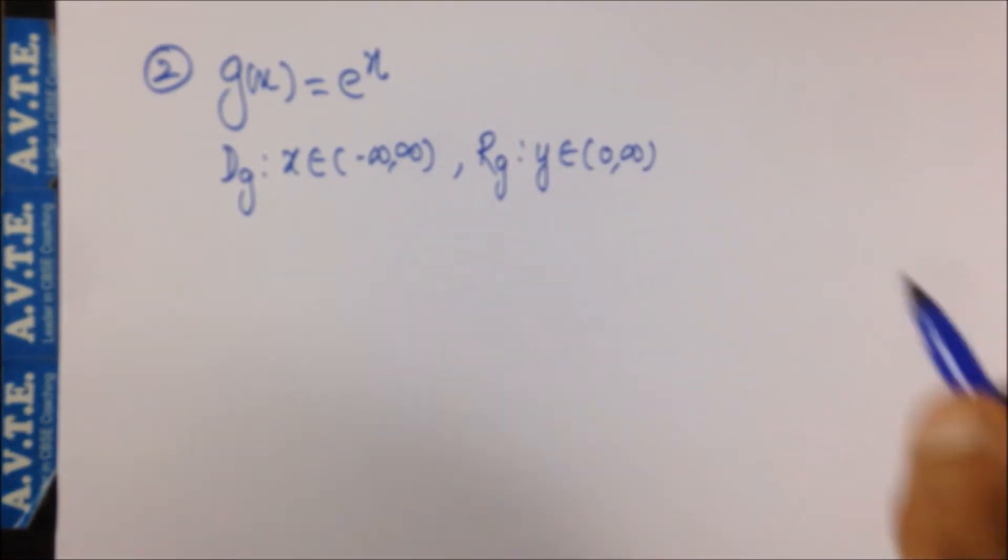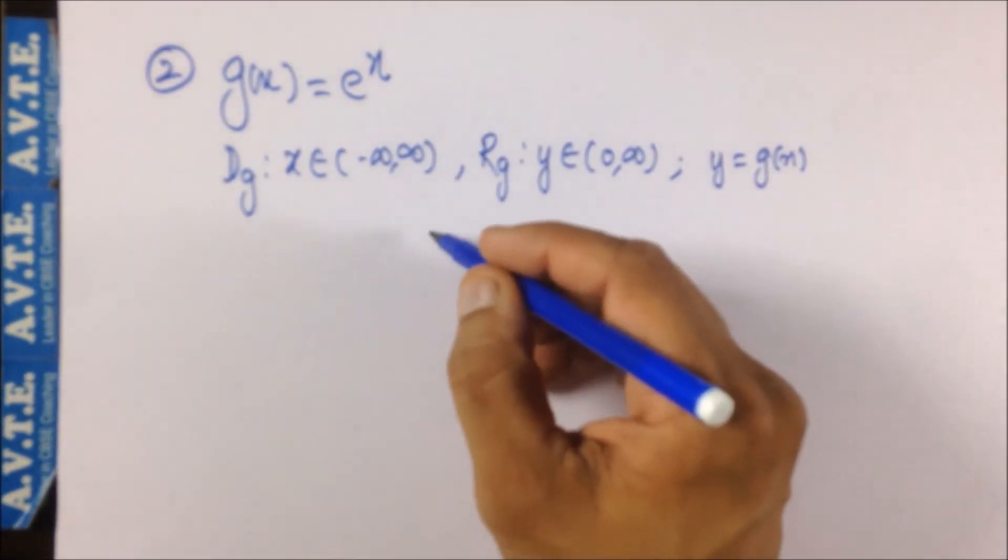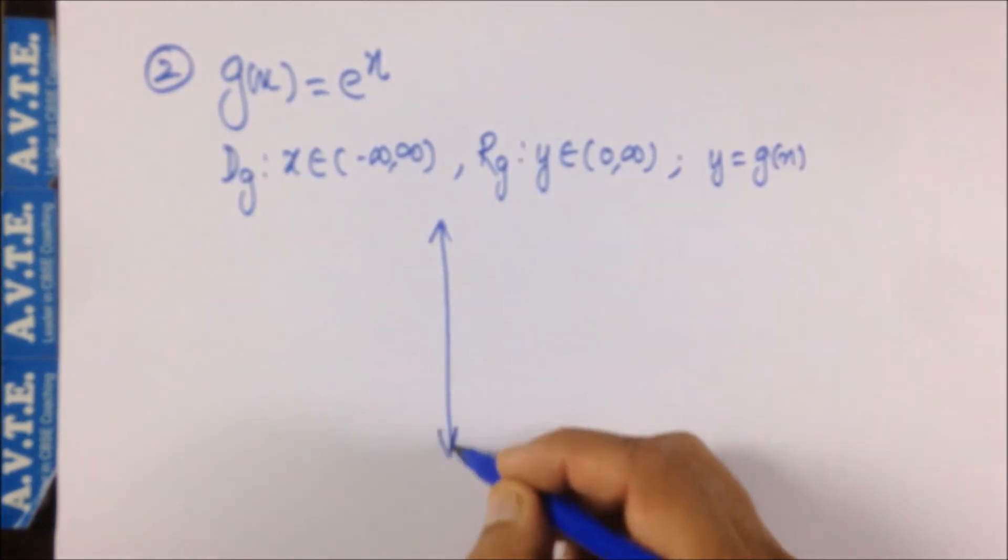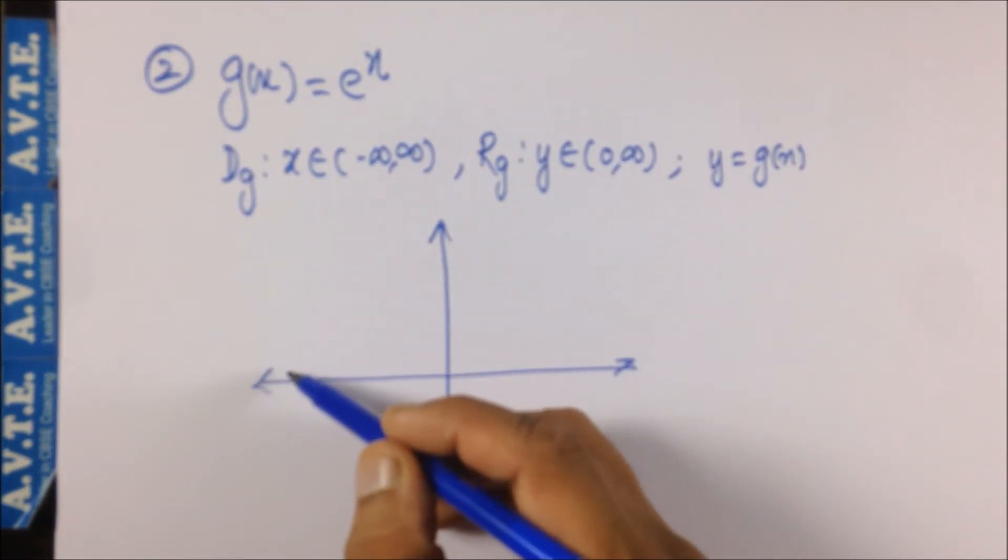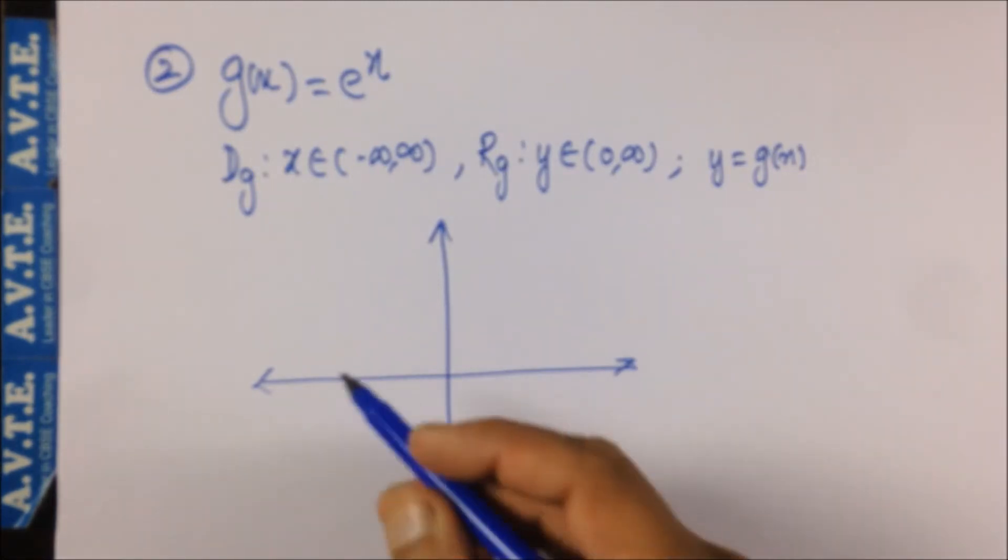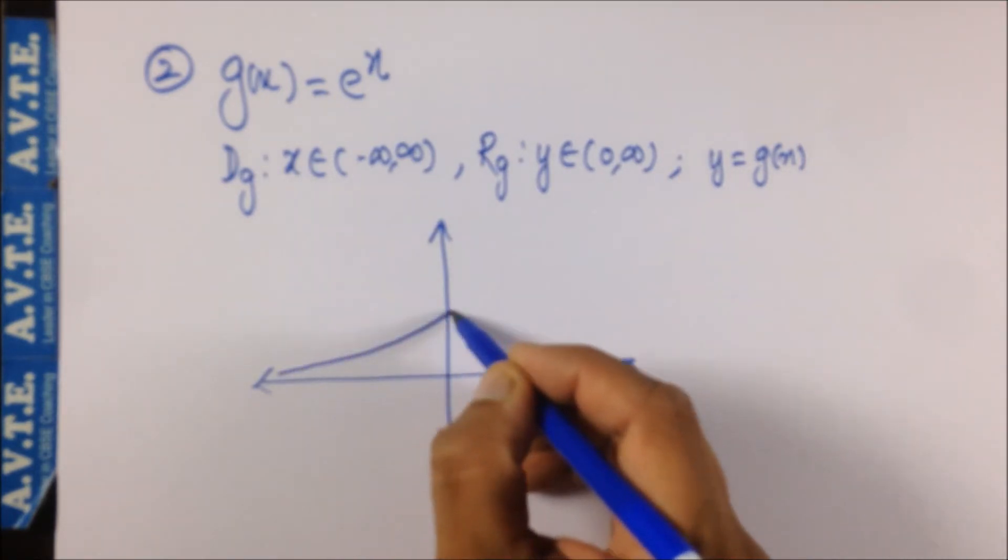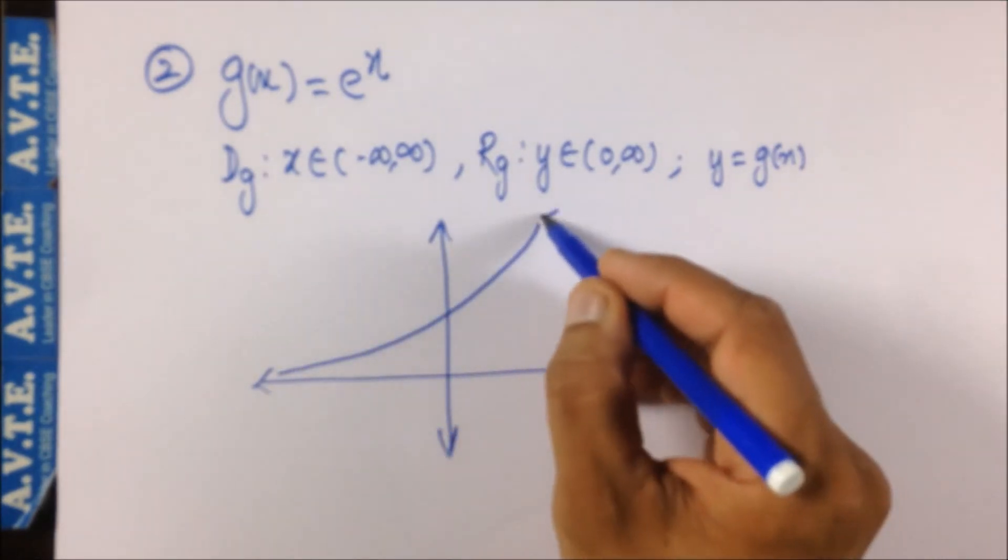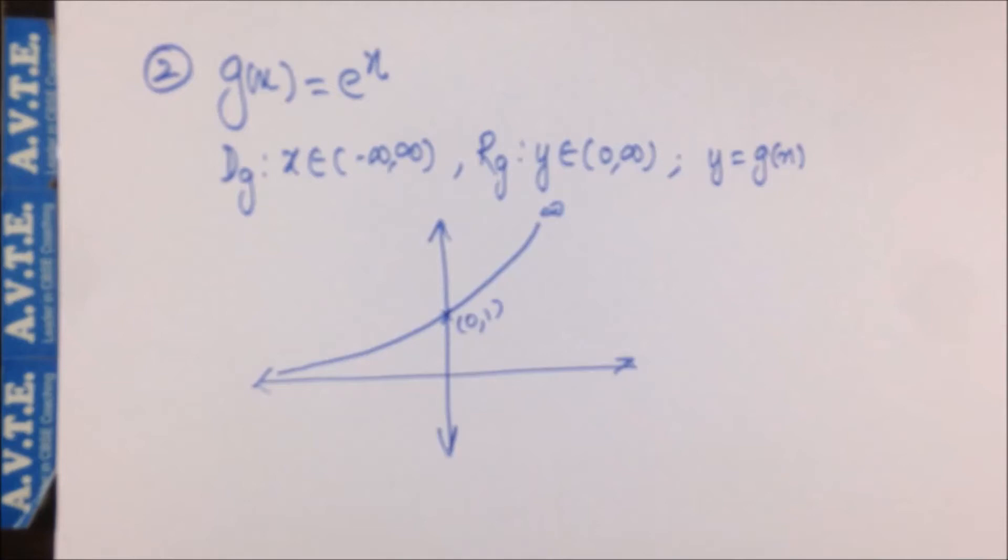Where y equals to g(x). So I'm making a graph, these are the standard graphs. As you put minus infinity to infinity the values of x, the graph comes from little positive value and it keeps on increasing till plus infinity. And e to the power 0 is 1. For all the exponential functions when you put 0 you get the answer as 1.